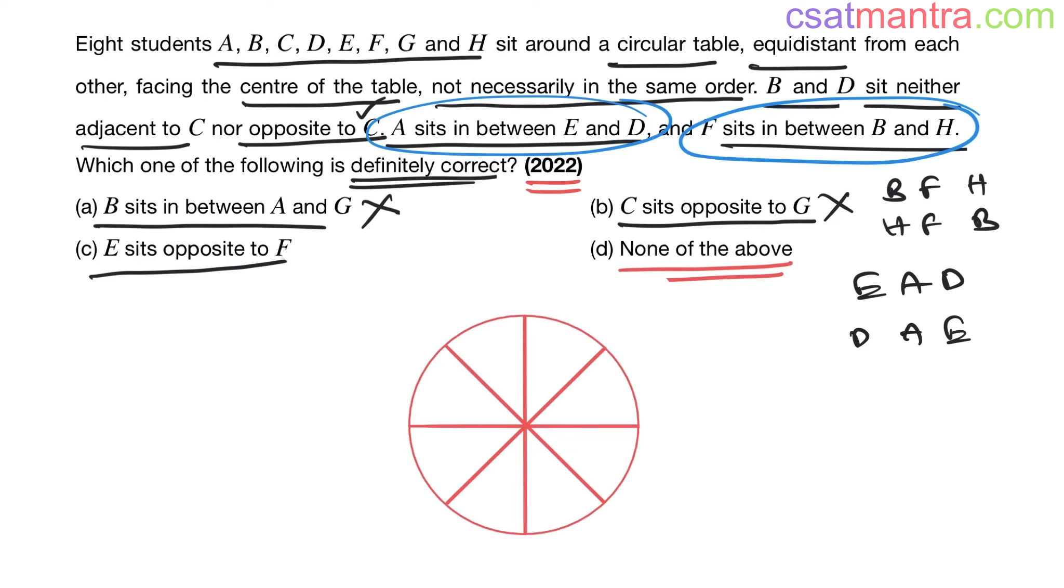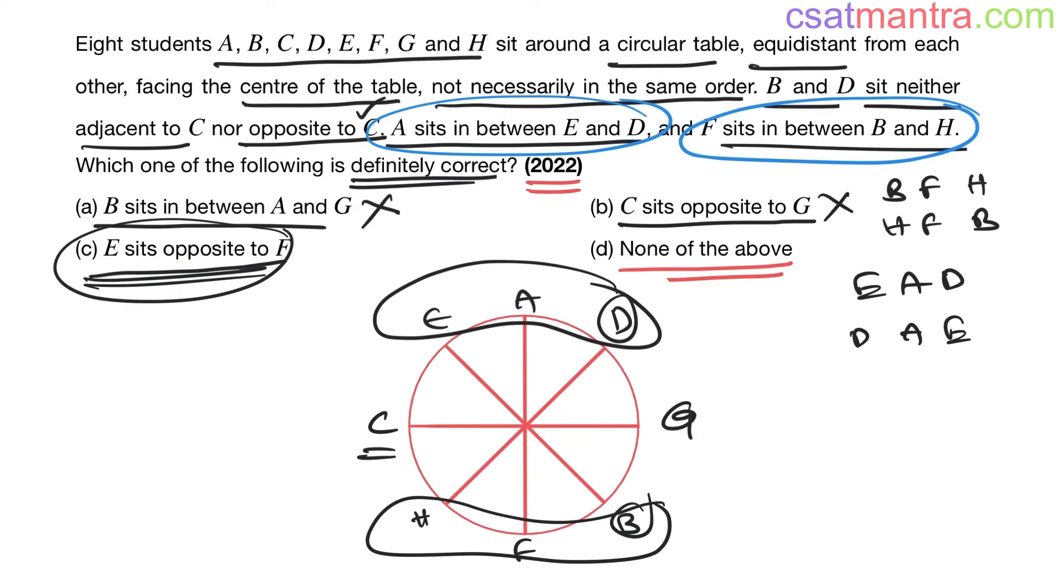Let's look at another possibility now. Fix the C position here. A sits between E and D, F sits between B and H. B and D are not adjacent, not opposite to C. G is here. Now see, E sits opposite to F? No, F is here, E is here, they are not opposite. So this is also incorrect.